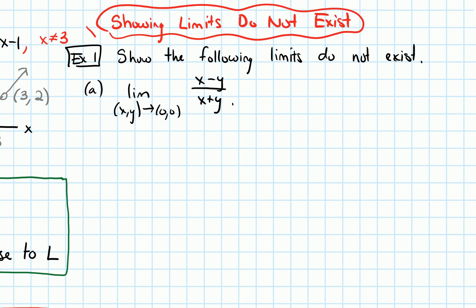So this problem is telling me what the answer should be — DNE. It's just a matter of how do we show that. The first thing that's always good to do, as with a limit of a function of one variable, is try plugging in the point and see what happens. If we plug in (0,0), we get 0 minus 0 on top and 0 plus 0 on the bottom, which is 0 over 0 — an indeterminate form. Sometimes indeterminate forms exist, sometimes they don't.